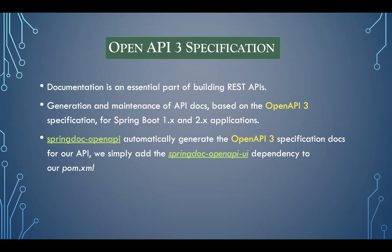To enable the UI and to enable the framework, you need to use the dependency 'springdoc-openapi'. You need to add 'springdoc-openapi' and 'springdoc-openapi-ui' as dependencies to your pom.xml so that it will enable your OpenAPI 3 specification.